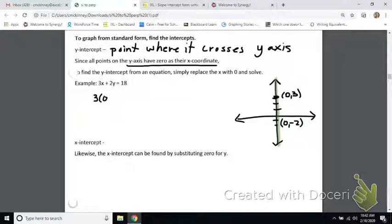So, this would be three times zero plus two y is 18. Now, what's three times zero? Zero. So, basically, this whole thing is just gone, and I'm left with two y is 18. So, I divide by two, and I get that my y-intercept is nine.